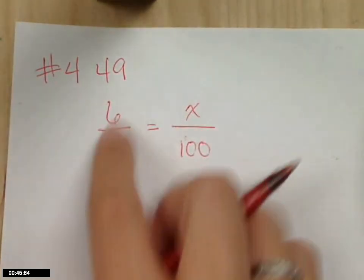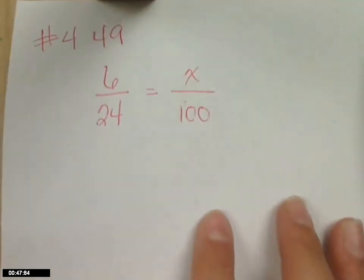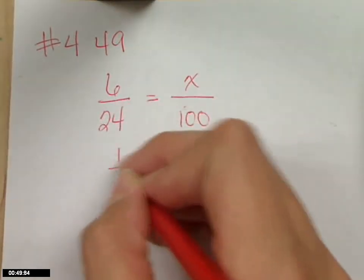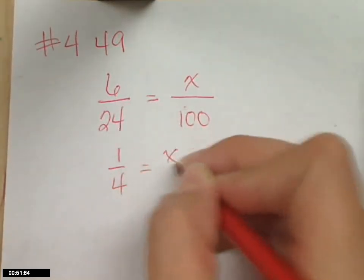Can I simplify six over 24? Yeah, and that'll make it easier. So it's one-fourth equals X over a hundred.